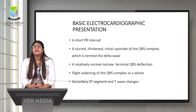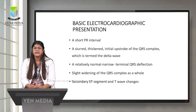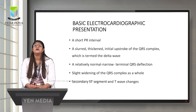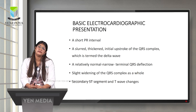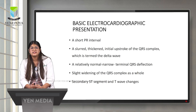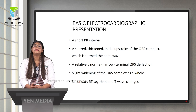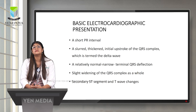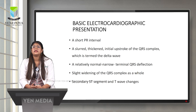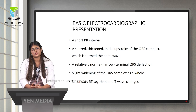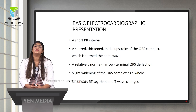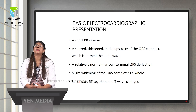The classic ECG findings in WPW syndrome include a short PR interval. The PR interval is measured from the beginning of the P wave to the beginning of the QRS complex — the time taken for the impulse to travel from the SA node to the AV node. Since the accessory pathway pre-excites the ventricle, a short PR interval is seen. The second finding is a slurred, thickened initial upstroke of the QRS complex, termed the delta wave.